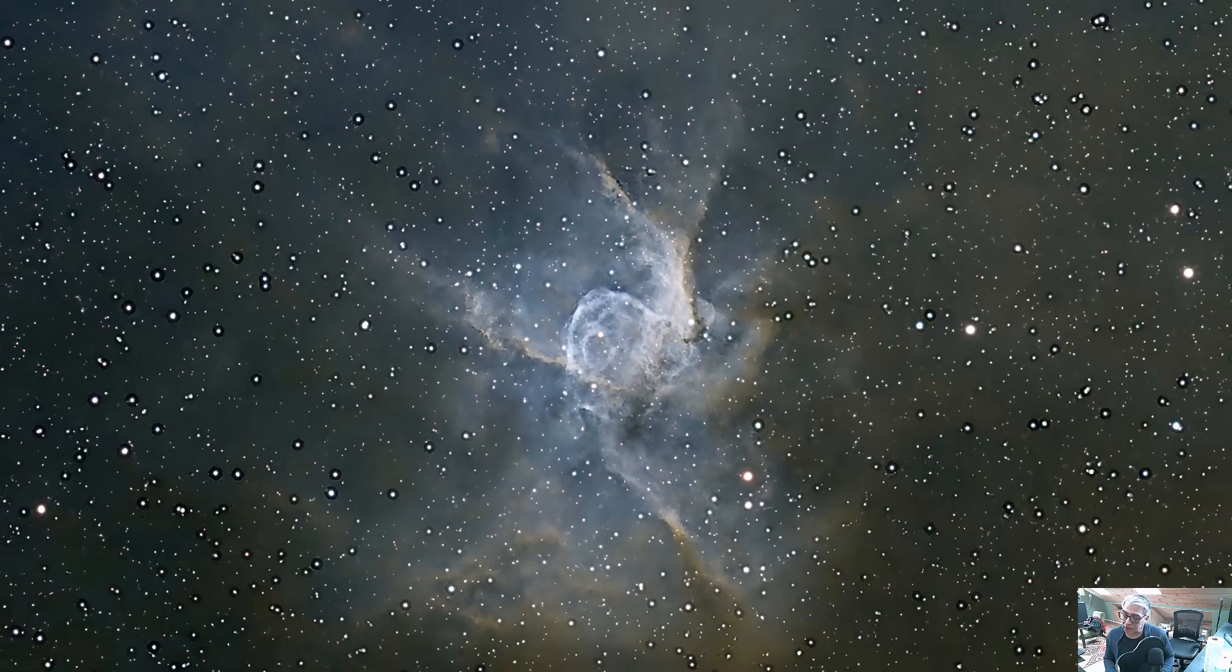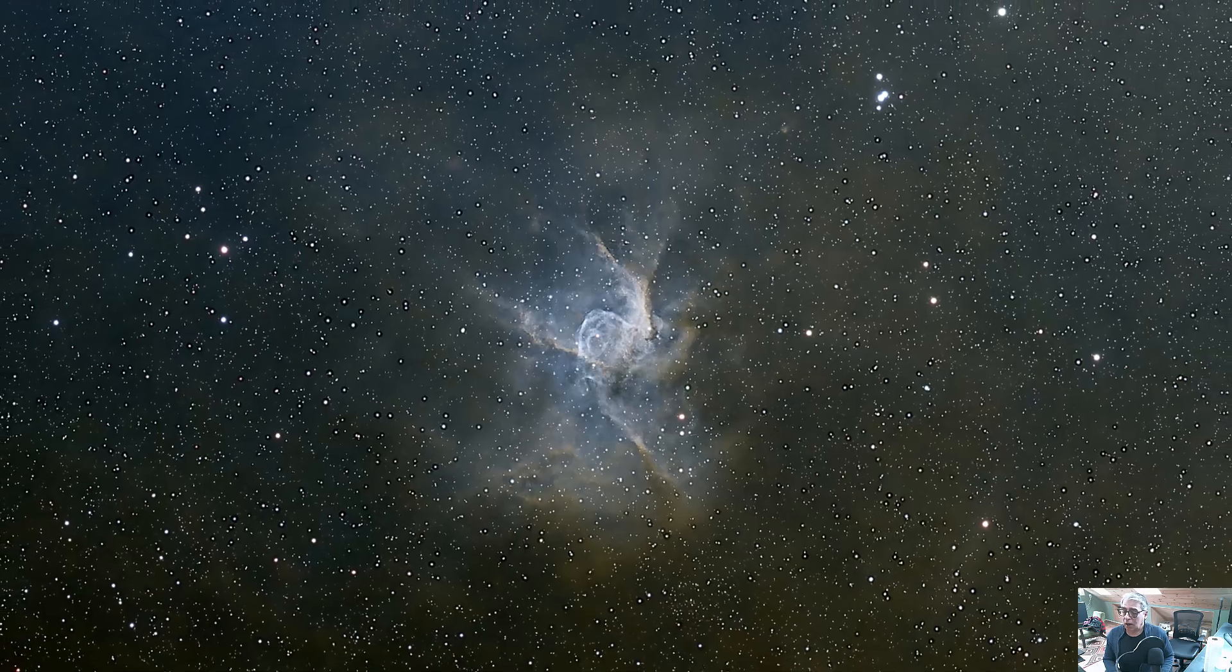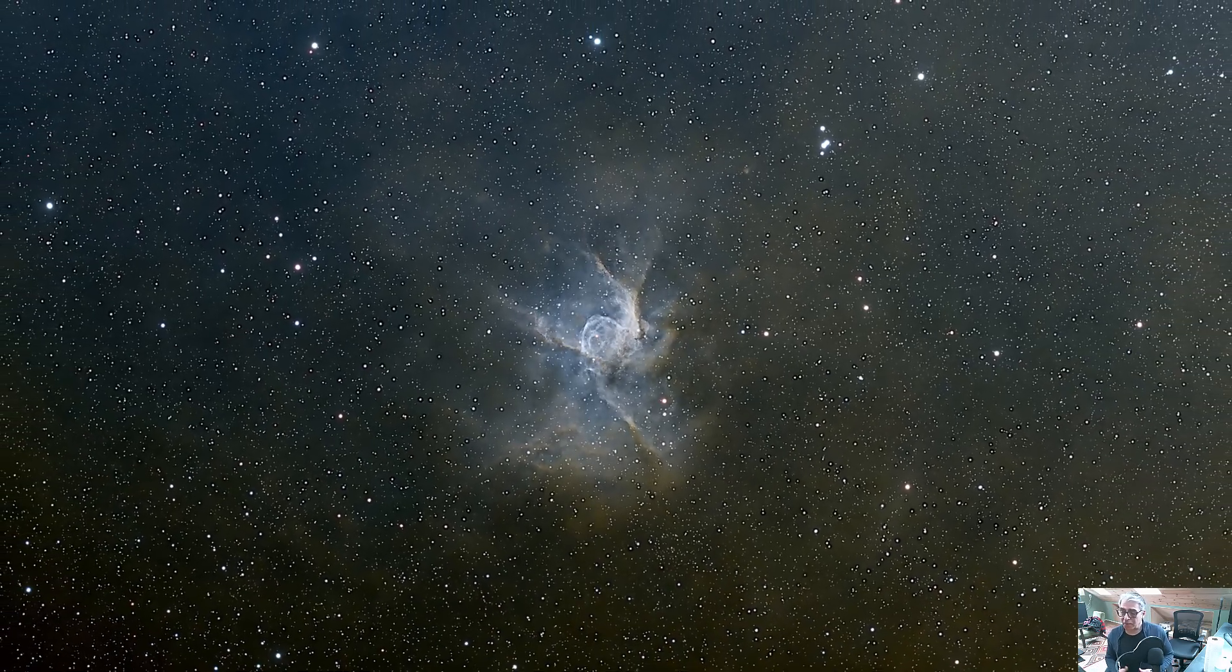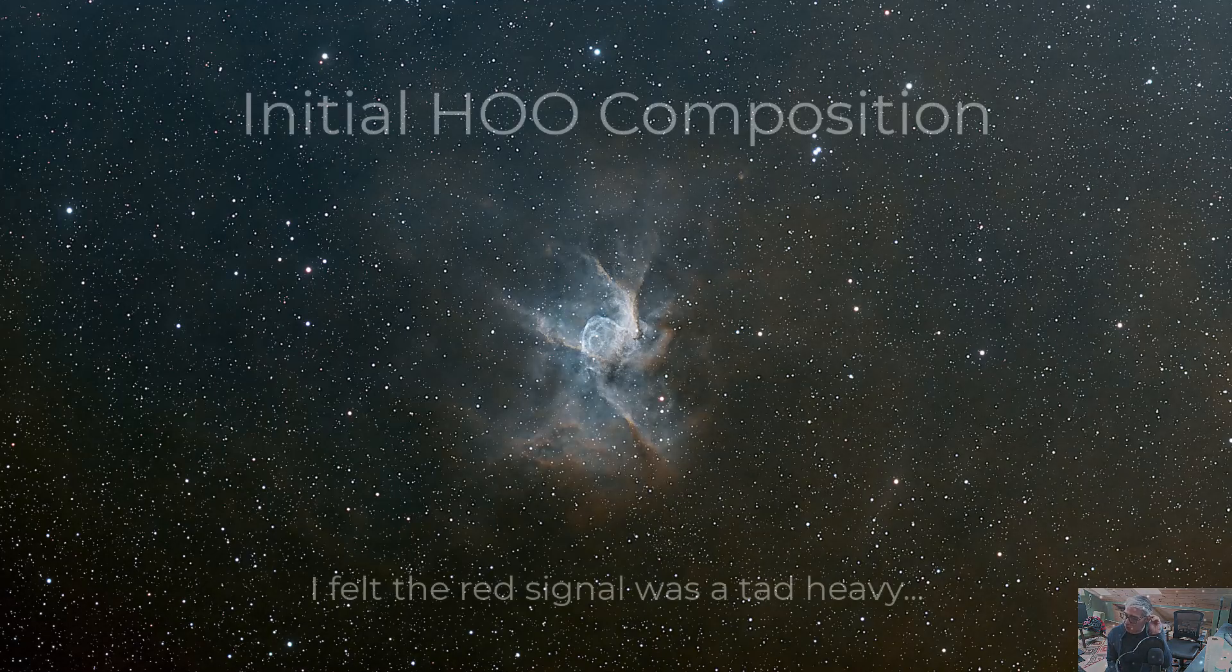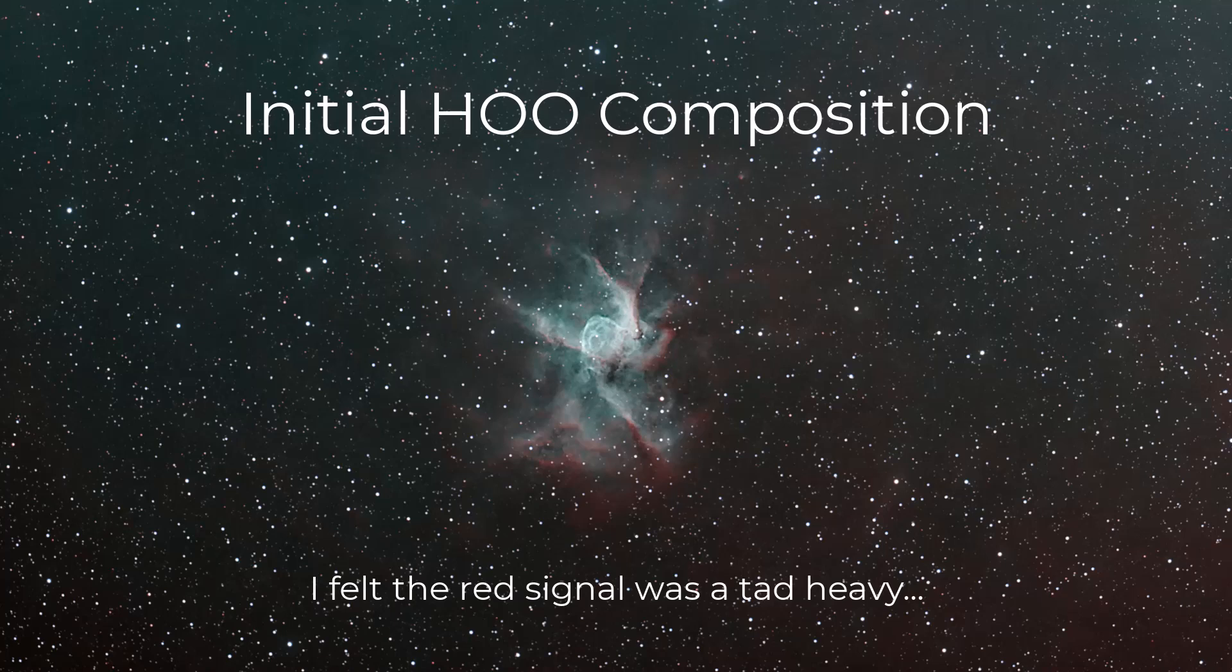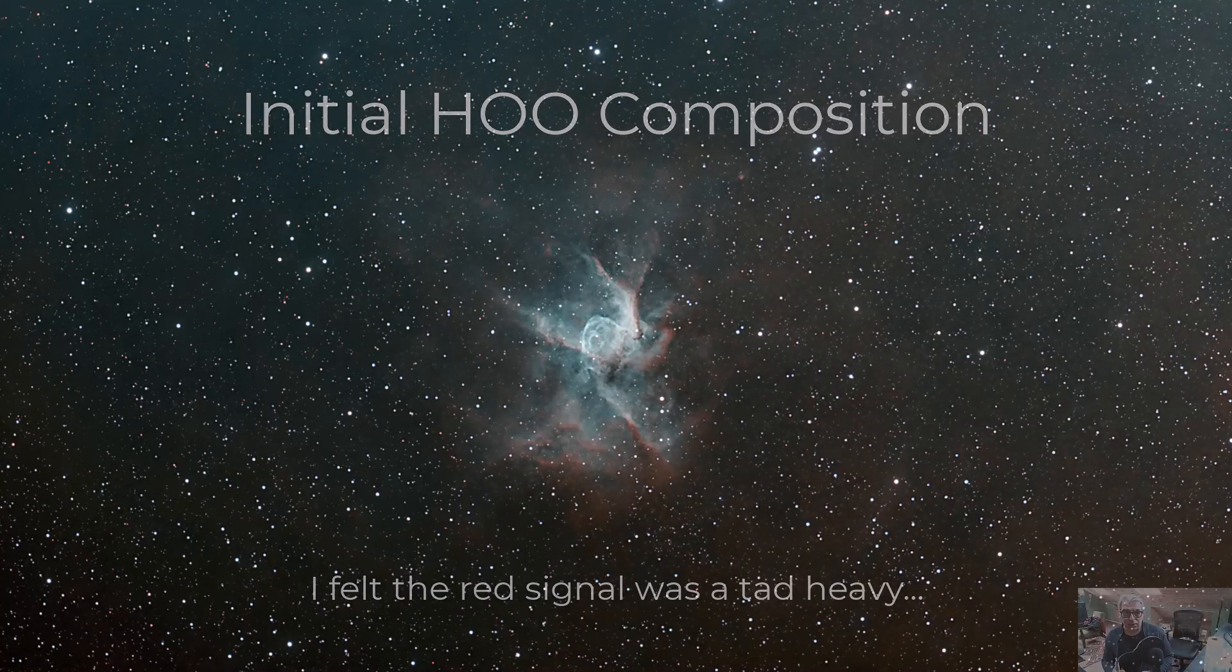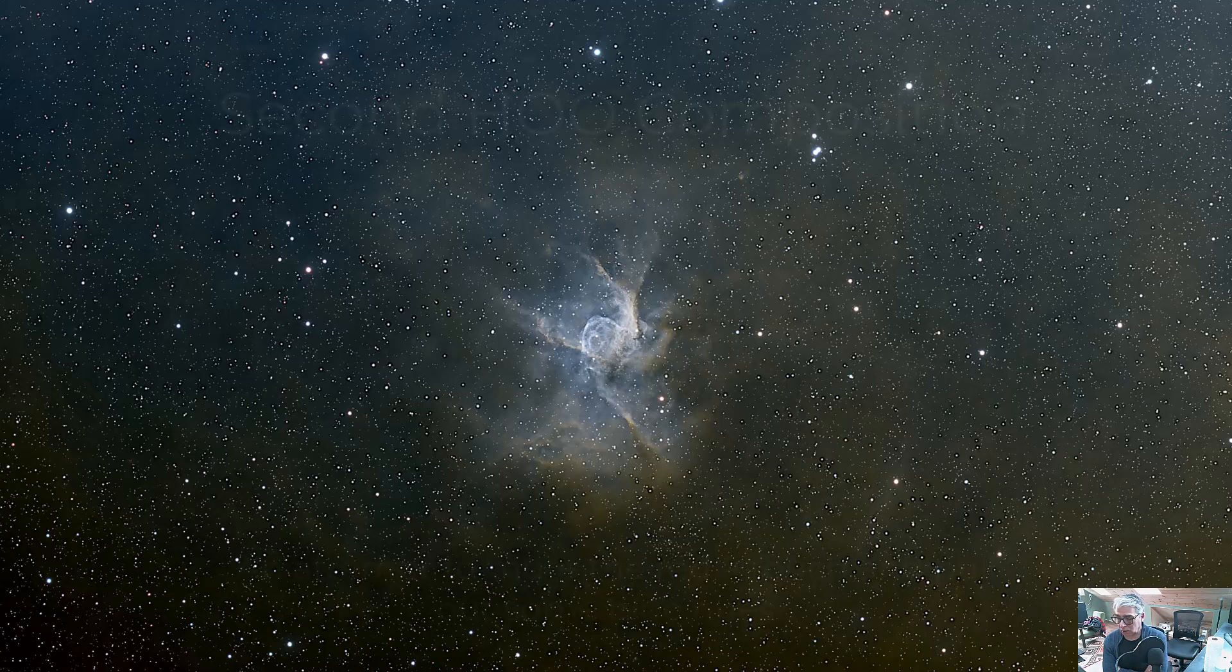This is an amazing image. These Wolf-Rayet stars are rare, and this is a beautiful example of their power. In terms of processing, I chose an HOO palette, which means that I chose my red to be fueled by my hydrogen alpha signal, and I chose both my blue and my green signals to be powered by my O3 signal. Using a variety of techniques in PixInsight, you can use pixel math, you can use other combination techniques, you're able to composite an RGB image.